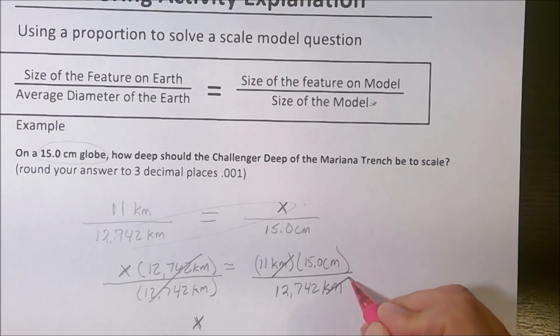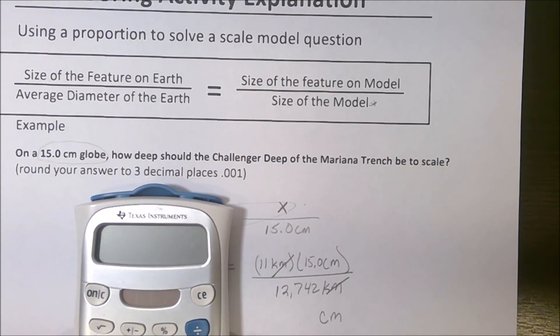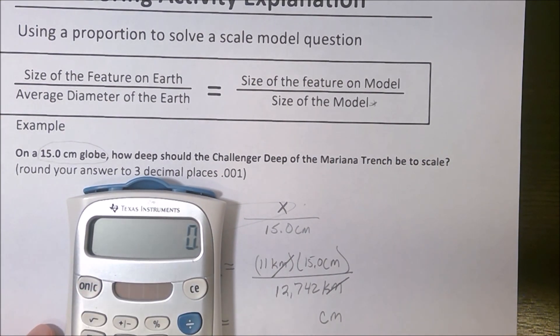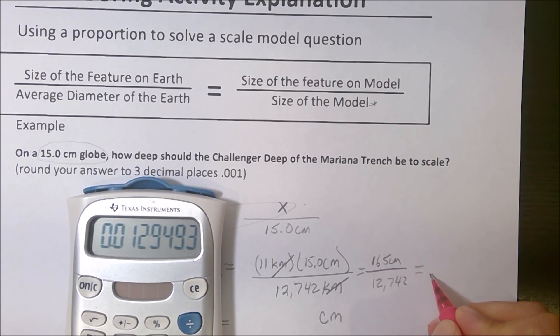Now, my kilometers cancels kilometers, so my final answer is going to be in centimeters. I'm going to put my calculator here. I've got 11 times 15, I get 165, so this would be 165 centimeters over 12,742. So I have to divide by 12,742, and I get some insanely small value.